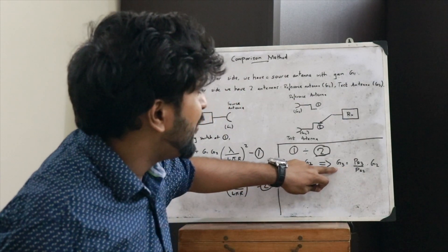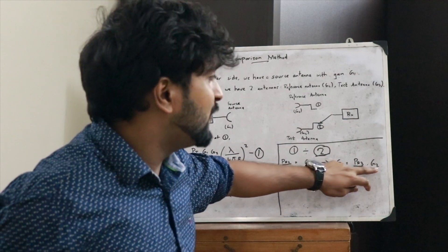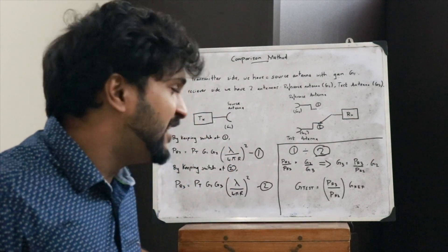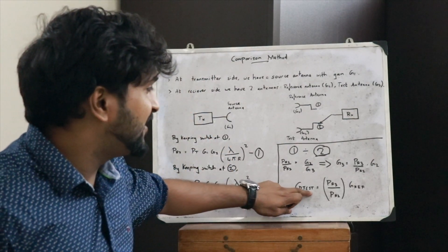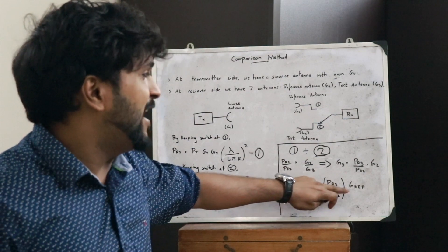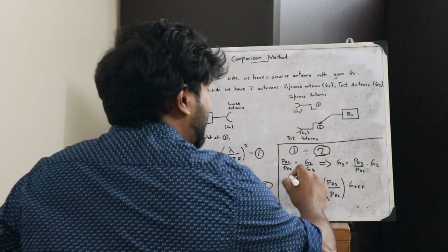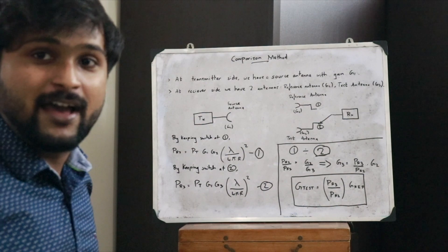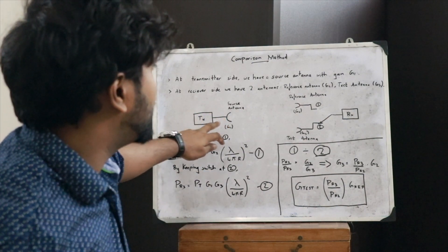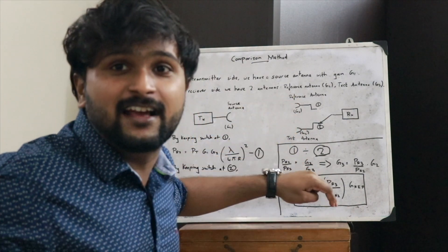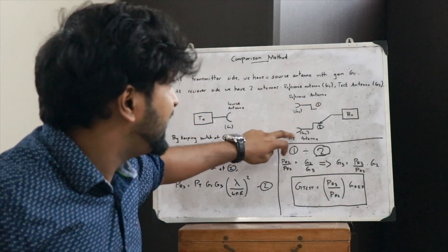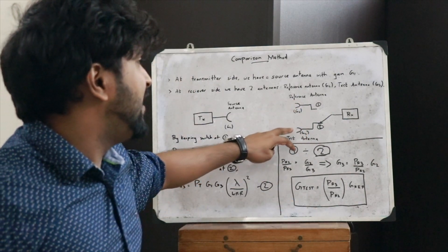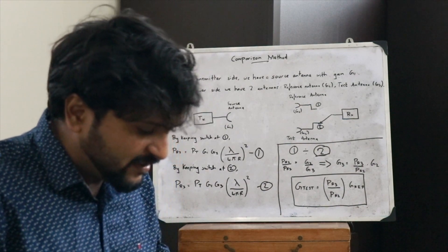Since G2 is known, the only unknown is G3. Rearranging, we get: G3 = (Pr3/Pr2) × G2. Therefore the gain of the test antenna equals (Pr3/Pr2) times the gain of the reference antenna. This is the equation with which we can find the gain of an unknown antenna using the comparison method.